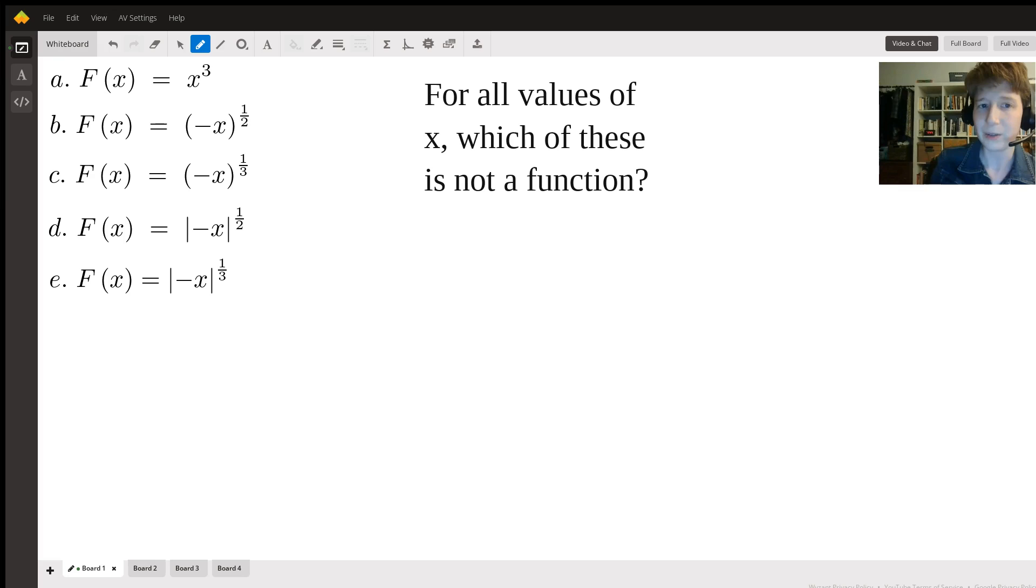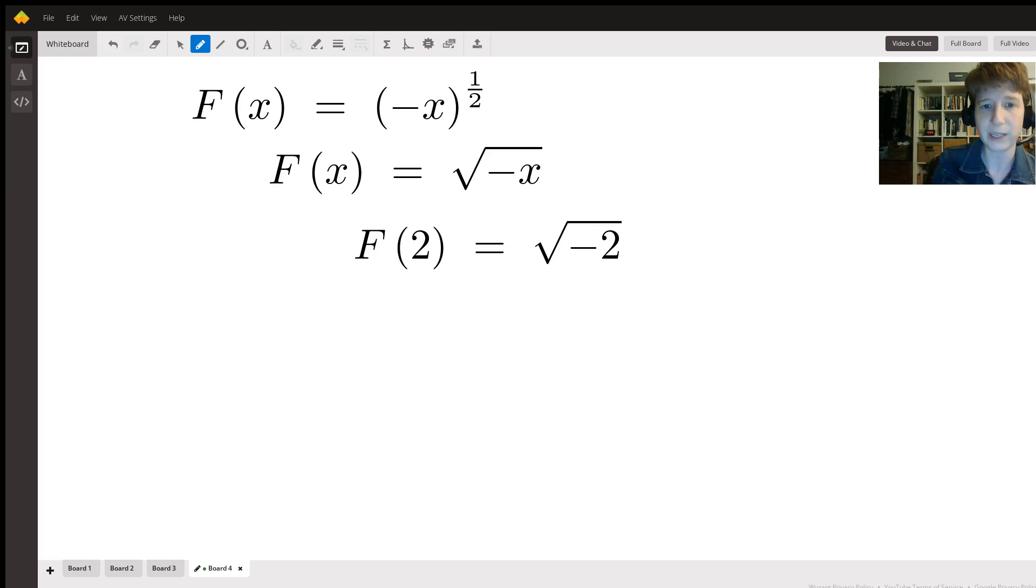So let's zero in on b here. That says f(x) equals (-x)^(1/2). I can rewrite it as f(x) equals the square root of negative x.